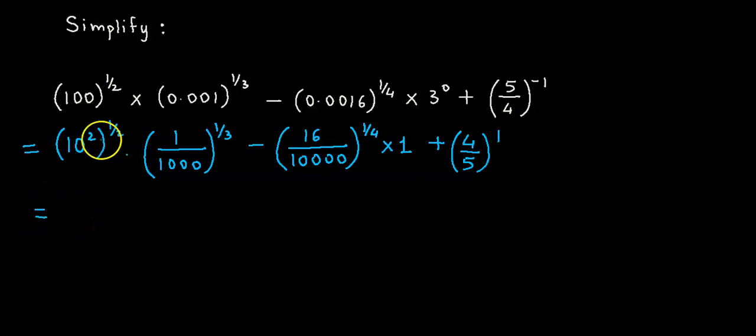Now let us simplify this further. This 2 cancels out with this 2, so we are left with 10 into - now 1000 is 10 cube, so this could be expressed as 1 by 10 the whole cube further raised to 1 by 3.